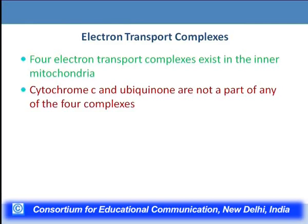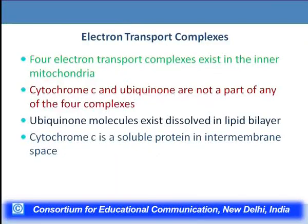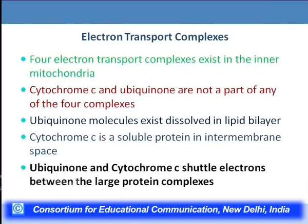Ubiquinone exists in the lipid bilayer and cytochrome C is a soluble protein present in the intermembrane space, capable of movement along the inner mitochondrial membrane. These two molecules shuttle electrons between the large protein complexes of the electron transport chain. Whenever NADH is the electron donor, electrons enter the respiratory chain via complex 1, which transfers them to ubiquinone generating ubiquinol. But whenever FADH₂ is formed — in the glycerol phosphate shuttle or TCA cycle — it remains bound to succinate dehydrogenase, and succinate dehydrogenase is the only TCA cycle enzyme present in the inner mitochondrial membrane.